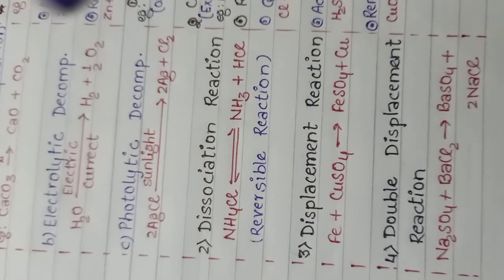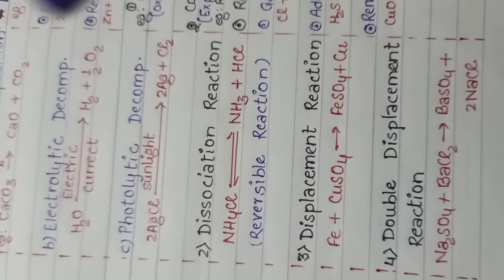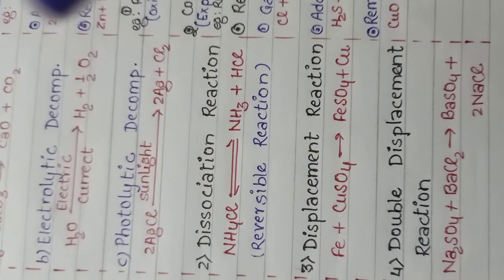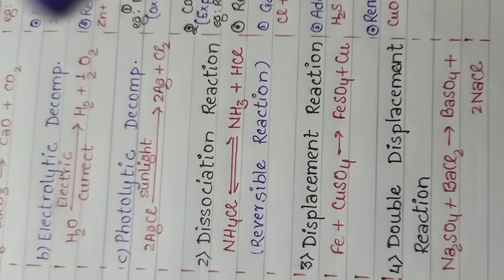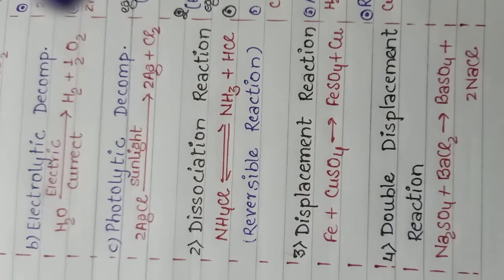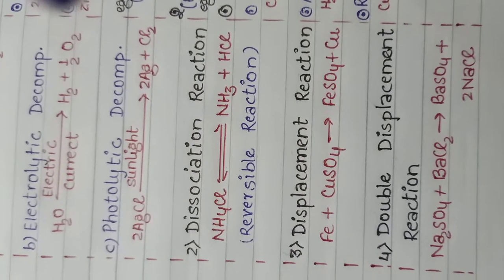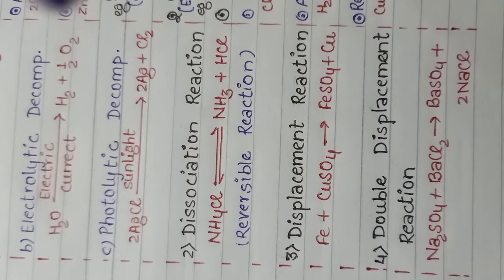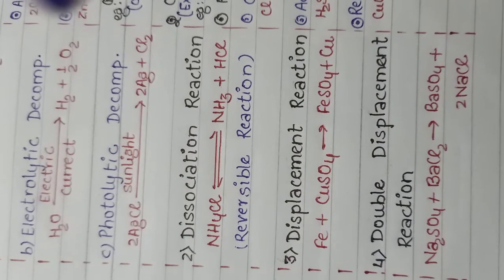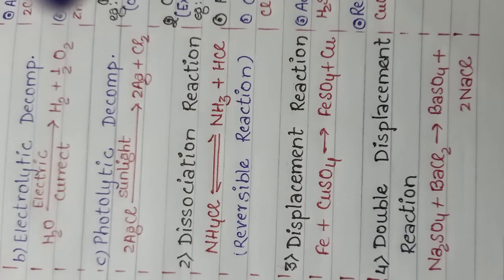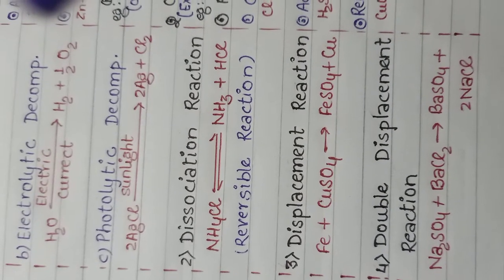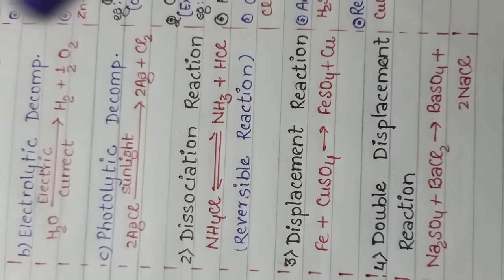Next one is double displacement reaction. In this reaction, two or more elements displace each other. For example, sodium sulfate reacts with barium chloride to form barium sulfate and sodium chloride. In this reaction, sodium and barium exchange their places with each other.